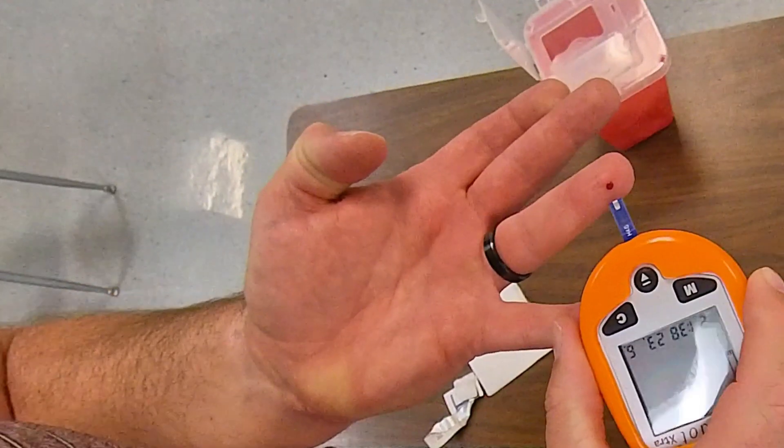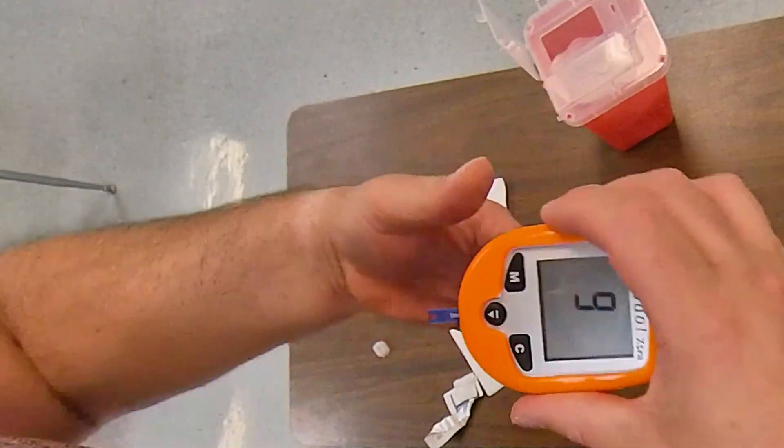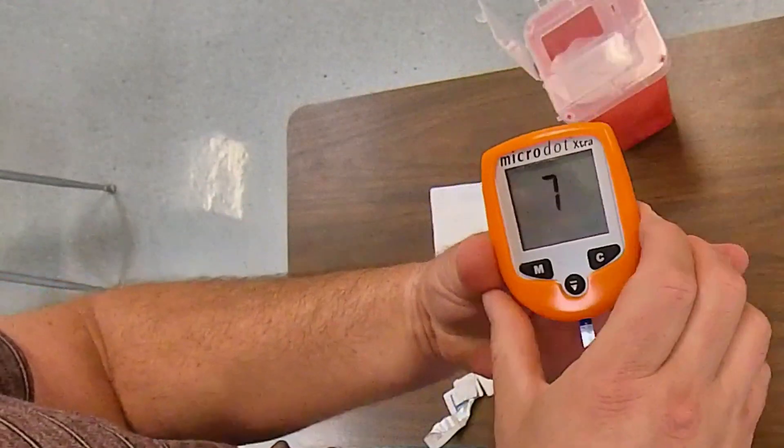Then we take the tip of the strip, touch it to the blood, in a capillary action it brings it up and then it will start counting down.